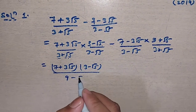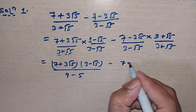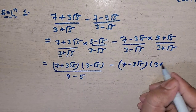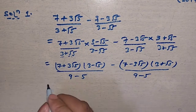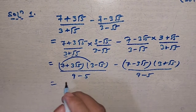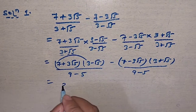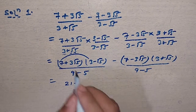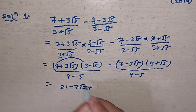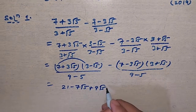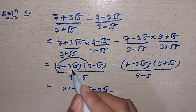So a² is 9 and b² is 5. For the numerator of the first fraction, we expand (7 + 3√5)(3 - √5): 7×3 = 21, minus 7√5, plus 9√5, minus 3×5 = 15. That gives 21 + 2√5 - 15, which is 6 + 2√5, divided by 4.